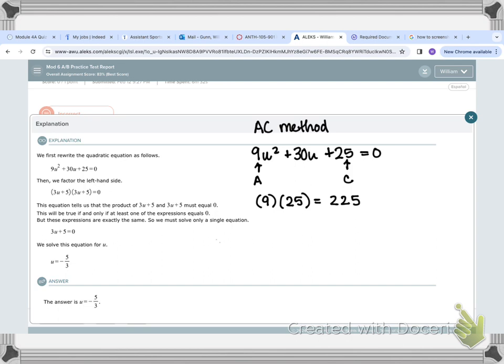So we want to factor 225. What we're looking for are going to be two numbers that multiply to equal 225, but they are also the same two numbers that add to equal the middle term, 30. So we're looking for factors of 225.